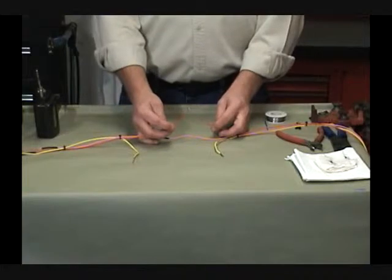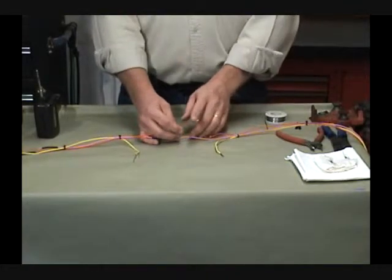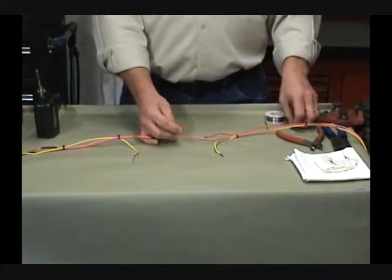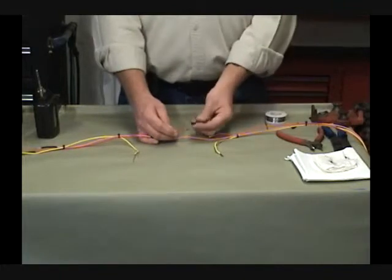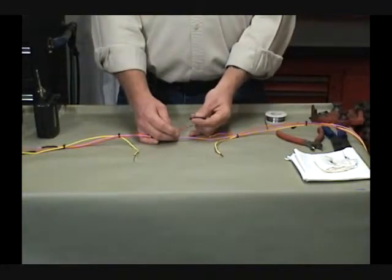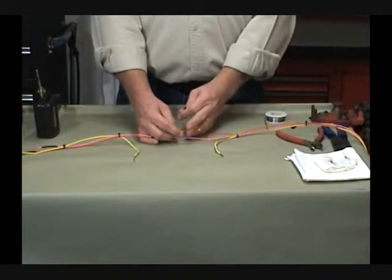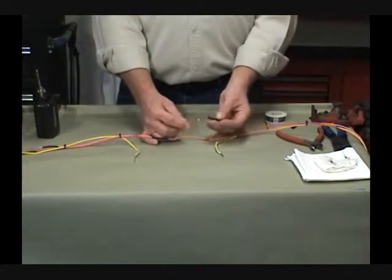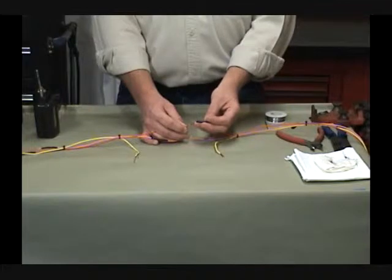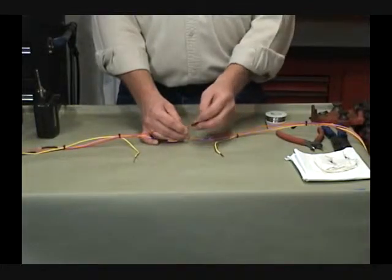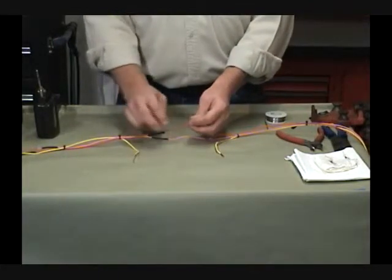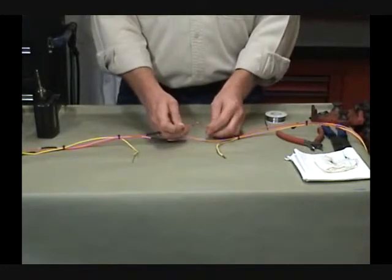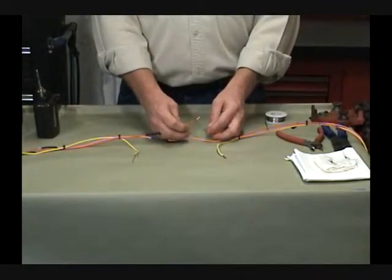As you can see, the wires are stripped. I've stripped them about 5 eighths of an inch on either side. Cut the heat shrink to about an inch and a quarter, inch and a half, so that it will overlap the insulation on either end of the solder joint. Slide the heat shrink on first. If you forget this step, you'll be mad at yourself because you'll have to take the solder joint back apart.